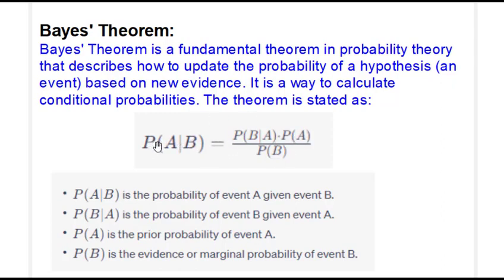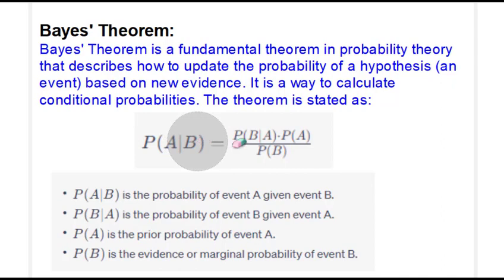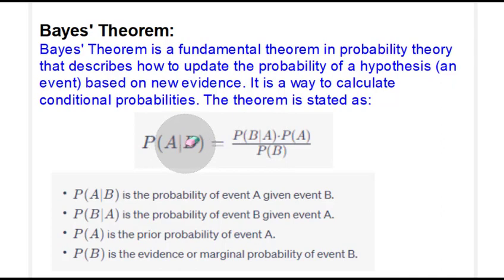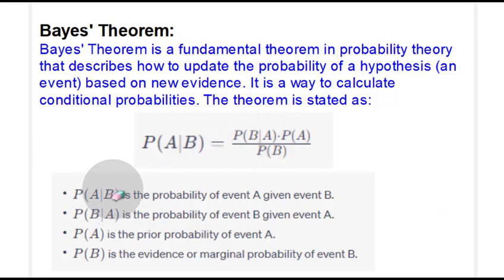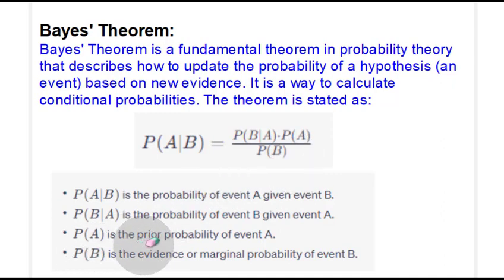This is how we calculate the probability of A given B — the conditional probability. So probability of A given B means: what is the probability that A will occur, given B has already occurred? Sometimes it is easier to calculate all the terms on the right-hand side but difficult to calculate the left-hand side. So if we know the right-hand side, we can use Bayes' theorem for calculating the left. The terms are given names: P(A) is called the prior probability — we know something beforehand. P(B) is the evidence, also called the marginal probability of event B.